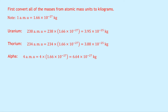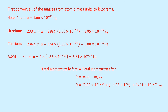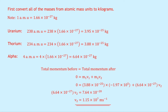We apply the law of conservation of momentum: total momentum before equals total momentum after. For explosions: 0 = m1v1 + m2v2. Substituting: 0 = (3.88 × 10⁻²⁵)(−1.97 × 10⁵) + (6.64 × 10⁻²⁷)v2. Note we didn't need the uranium nucleus mass since the left-hand side is 0. Multiplying and rearranging: 6.64 × 10⁻²⁷ v2 = 7.64 × 10⁻²⁰. Dividing both sides gives v2 = 1.15 × 10⁷ meters per second.